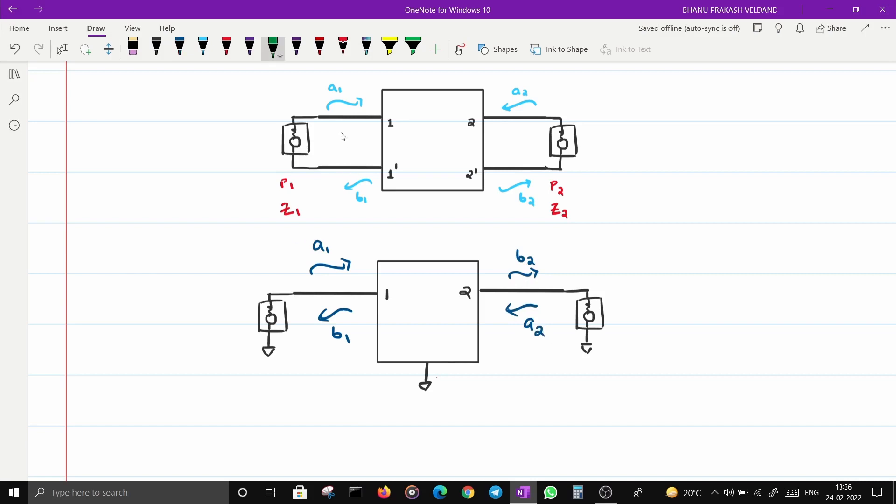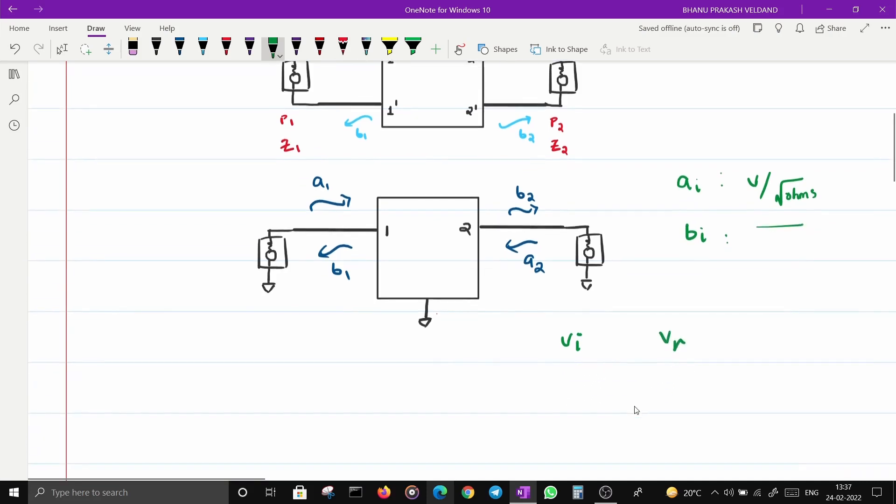Let's discuss the relationship between A1 and B1. The units of A_i or B_i are volts per root ohms. The incident wave is represented by V_I going inward, and reflected wave is represented by V_R.